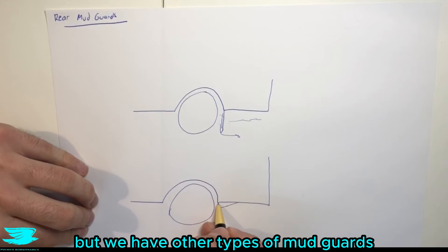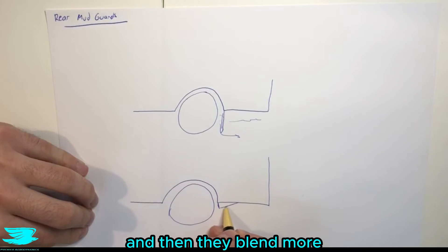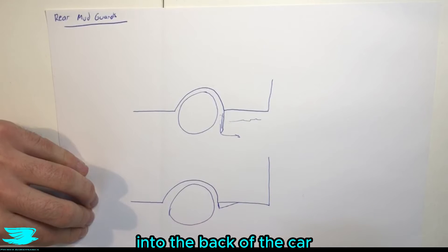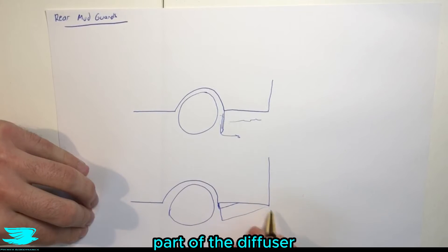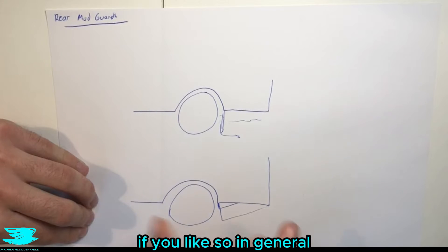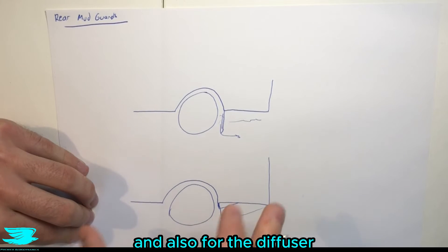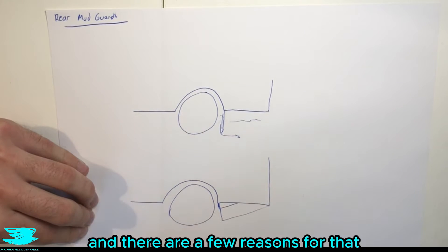But we have other types of mudguards which sort of come down and then they blend more into the back of the car. And they can come down even further as well and come more up and actually become part of the diffuser if you like. So in general, these are actually a lot better for drag and also for the diffuser. And there are a few reasons for that.